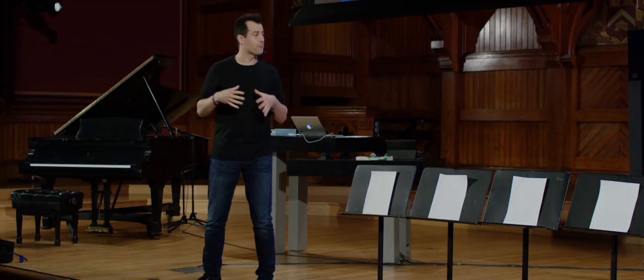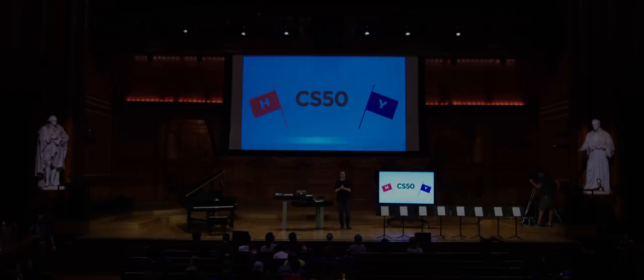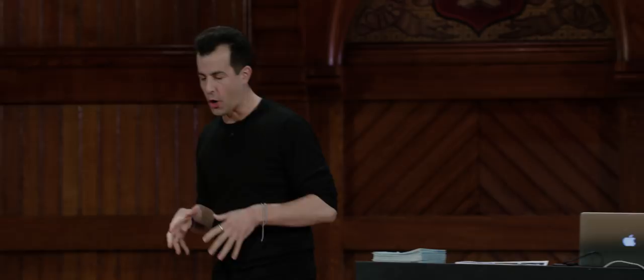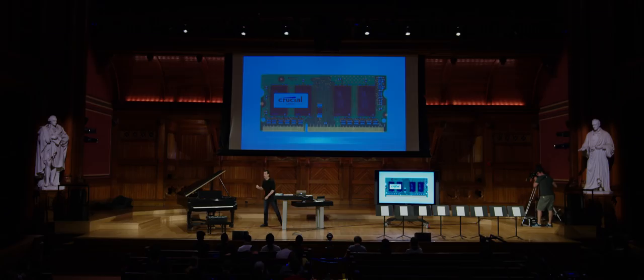All right, this is CS50, and this is Lecture 3. Today, the goal is to be a lot more algorithmic than code-oriented and to really come back to where we started in Lecture 0 when we talked about computational thinking and algorithms. Because now you have a few weeks under your belt, and a few new tools and hopefully skills, even though odds are you're still getting comfortable with some of those skills.